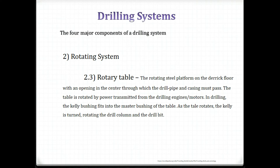The rotary table is a rotating steel platform on the derrick floor with an opening in the center through which the drill pipe and casing must pass. The table is rotated by power transmitted from the drilling engine's motors. In drilling, the kelly bushing fits into the master bushing of the table. As the table rotates, the kelly is turned, rotating the drill column and the drill bit.